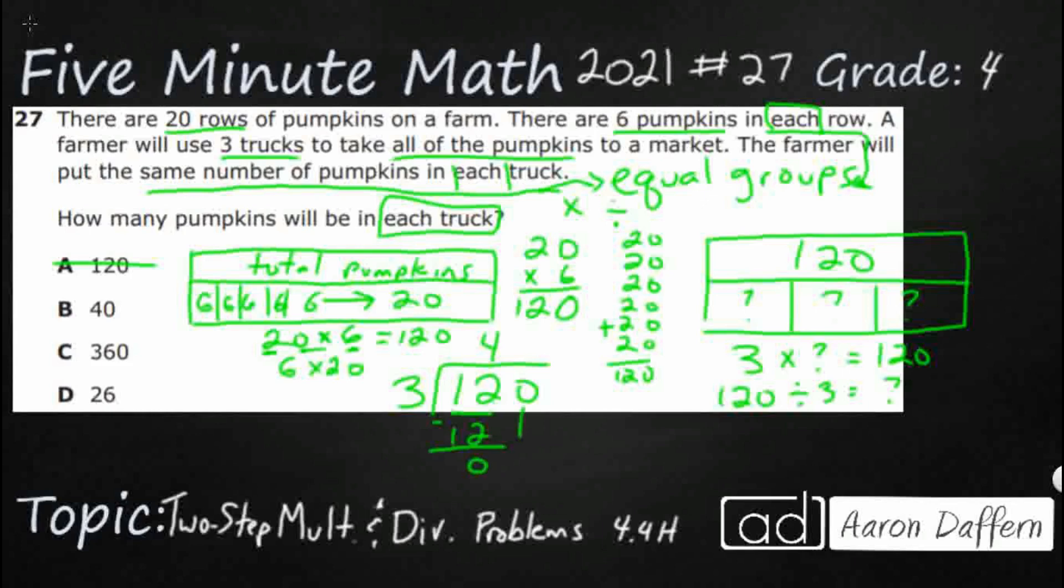But we're not done yet. Now we need to bring this zero down. And we need to divide all over again. And yes, three doesn't go into zero. That's fine. But we need to put a zero there because 40 is a lot different than four. We need to go ahead and finish this out. So it looks like our answer is going to be 40.